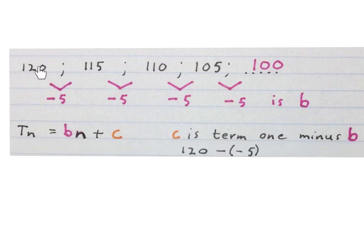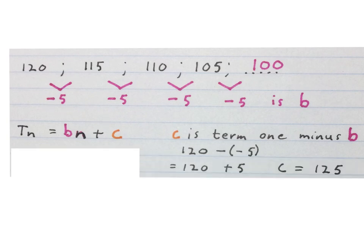Now be careful, that is the 120 minus minus 5, which we write like this. So these two minuses becomes a plus. 120 plus 5, so c is 125.